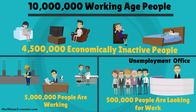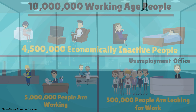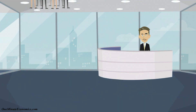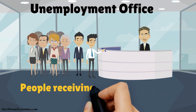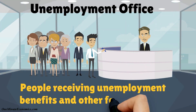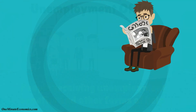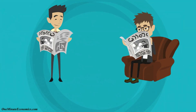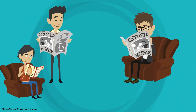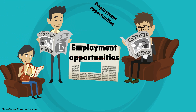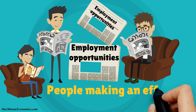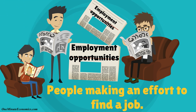To figure out how many people are jobless but actively looking for work, the authorities figure out how many people are receiving unemployment benefits and other forms of help on the one hand. And on the other hand, they also analyze data from unemployment offices to measure how many people are making an effort to find a job.